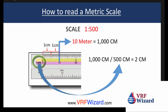One centimeter on the drawing, then another centimeter — 2 centimeters total. 2 times 500 gives you 1,000 centimeters, which is equal to 10 meters. So when you measure 1 centimeter, that gives you 500 centimeters on the building, and another 500 gives you 1,000 centimeters. That will require you to measure 2 centimeters on the drawing.